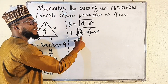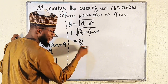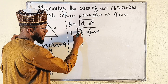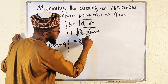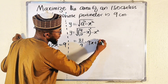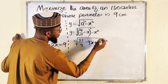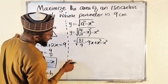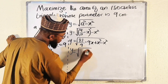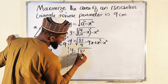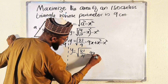Expanding (9/2 − x)²: first term squared gives 81/4, cross term gives −9x, and second term squared gives x². We then subtract x², so the x² terms cancel. Finally, y = √(81/4 − 9x).